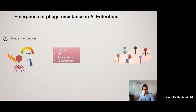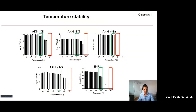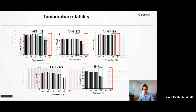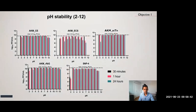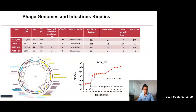Another challenge is that phages can be inactivated by different environmental conditions. We studied the temperature stability of our phages and found that all phages were stable at temperatures up to 60°C, and were inactivated at higher temperatures as expected — though this opens up the possibility of applying these phages in additional processing steps. We also studied stability across a wide range of pHs and found all phages were stable even at low and high pHs such as pH 3 and, in some cases, pH 12. We also studied phage genomes, finding variability in genome size, coding sequences, and tRNAs, with no virulence factors or antimicrobial resistance genes detected.